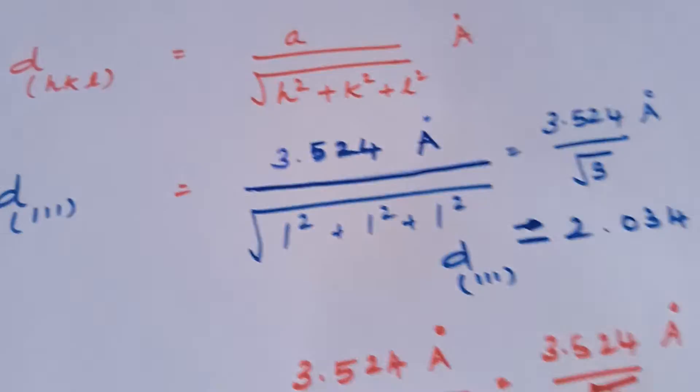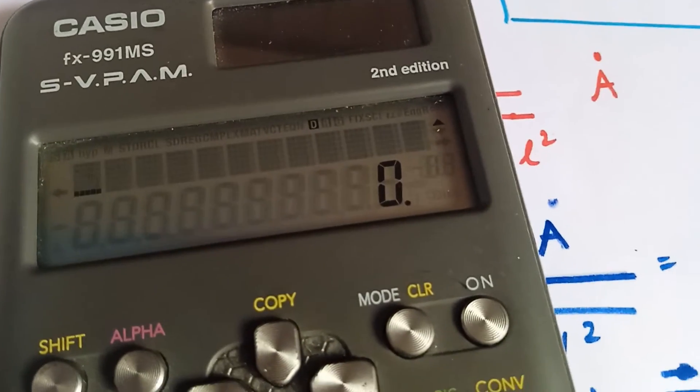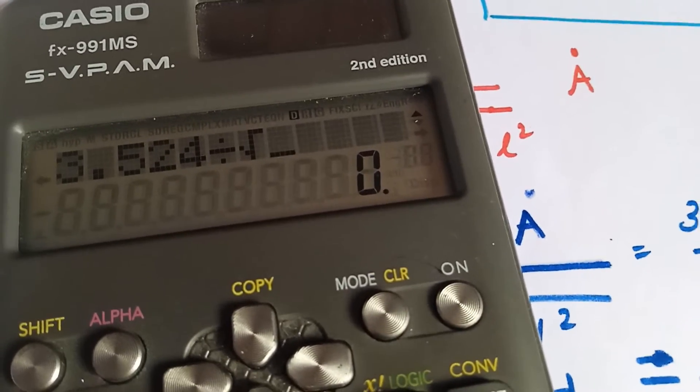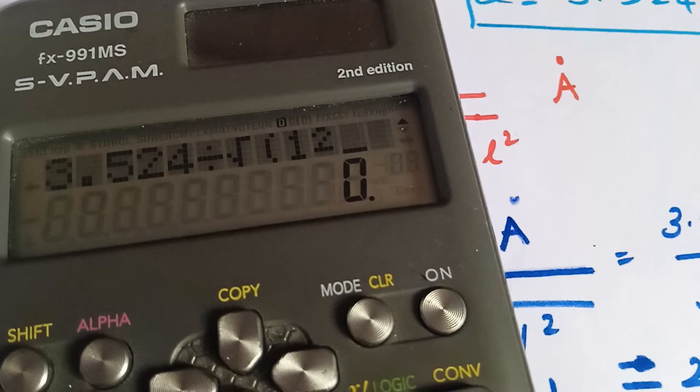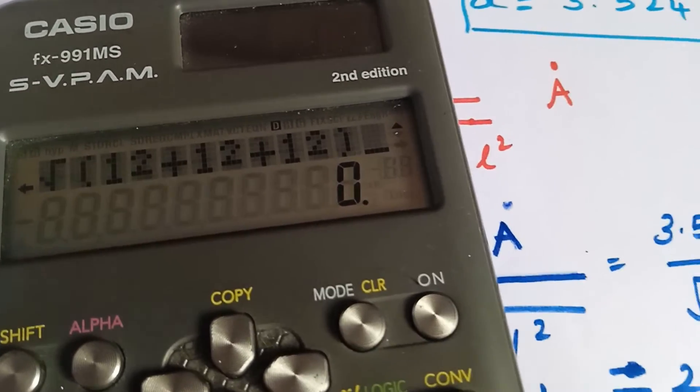we get 3.524 divided by root of 1 square plus 1 square plus 1 square is equal to 2.034 angstrom unit.